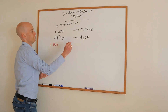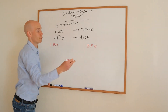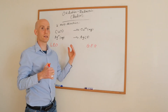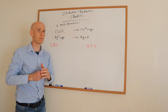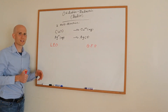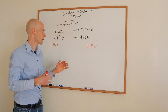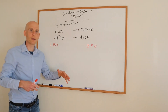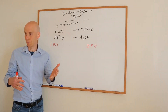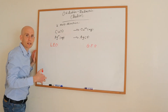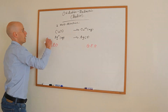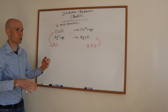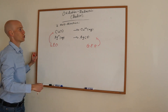As a reminder, LEO the lion says GER — Loss of Electrons is Oxidation, Gain of Electrons is Reduction. Even electrochemists use that mnemonic if they don't deal with it daily. So copper became positive — it lost electrons — meaning this is oxidation. And silver gained electrons to become neutral, so that is reduction. Gaining electrons is reduction — I know it's an unfortunate thing, but that's how it works.